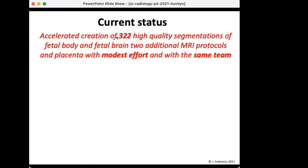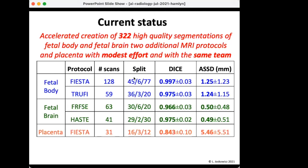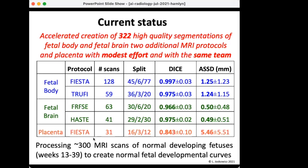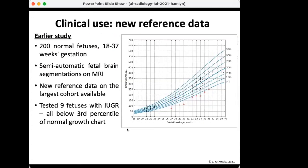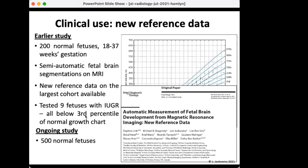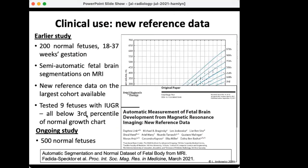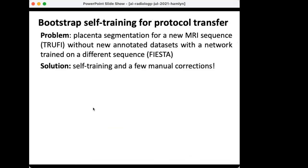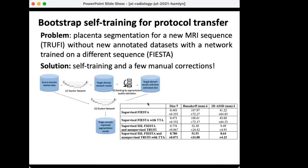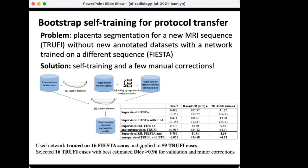We are now at the advanced stage with 800 datasets — achieved with a modest effort, not millions of dollars. The same team produced this; all students learned how to correct annotations, making it more efficient. We also managed protocol transfer across different scanning protocols, achieving a very high level of accuracy. With this we were able to generate the fetal development curves. We did similar work in different applications including orthopedics, and also managed some transfer learning and self-training for protocol transfer between two MRI protocols.